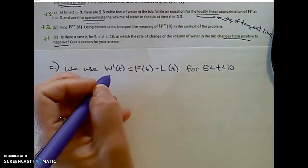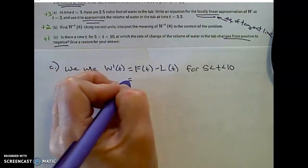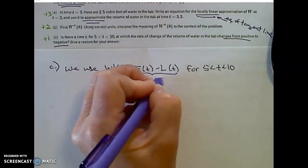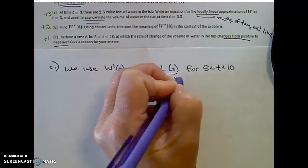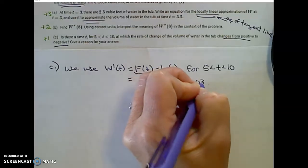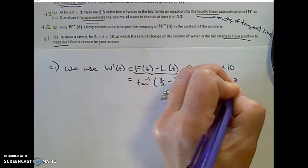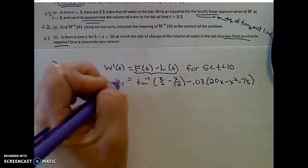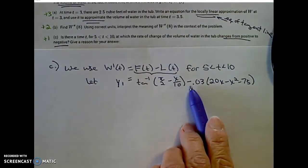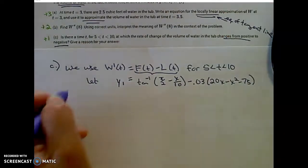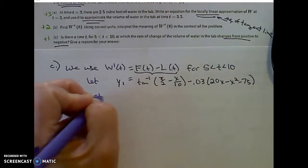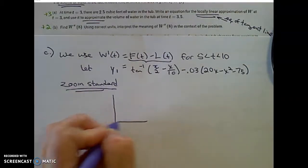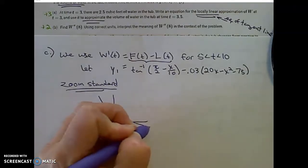I just plugged this into my calculator. Plugging both of these in: inverse tangent of pi over 2 minus, in my calculator I need x over 10, minus 0.03 times 20x minus x squared minus 75. And I let y1 in my calculator equal that whole subtraction of those two functions. I was perfectly fine with a zoom standard window. So I hit zoom, standard. And my graph looked like this.